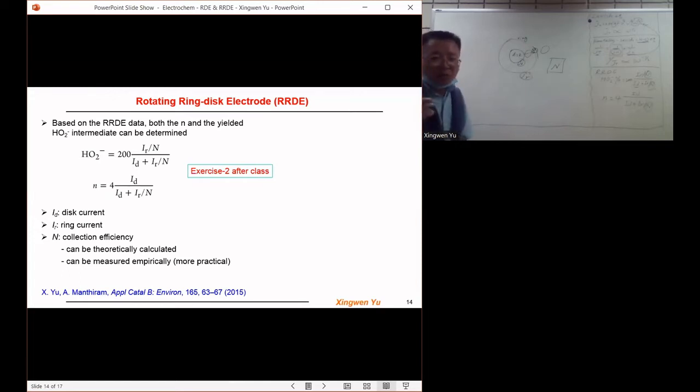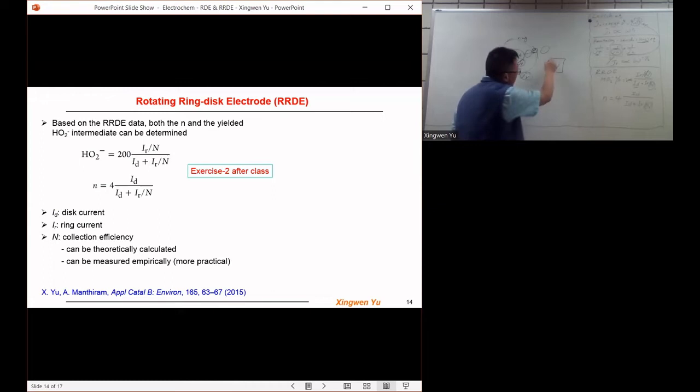It can also be experimentally calibrated. So we can run an experiment with a known electrochemical reaction, and then based on the number there, we can calibrate the number N for the RRDE.